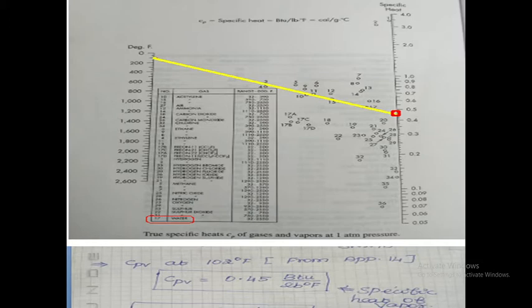How to read specific heat of vapor from this graph: you should mark temperature 102 degrees Fahrenheit on the temperature scale. Then you should choose the vapor component, which is water for our problem, to identify that component number in the table. The red color circle indicates the water component number. In this table, 17 is the water number.